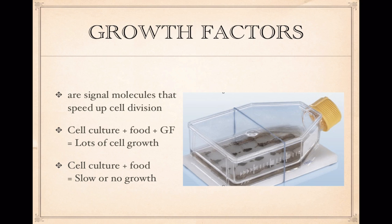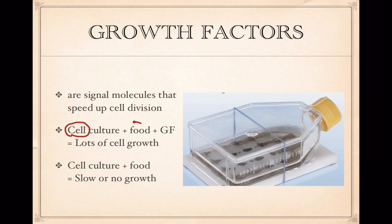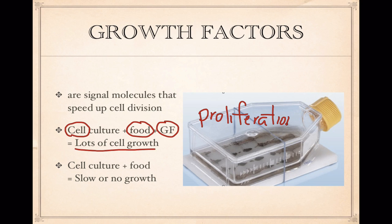For example, if you are growing cells in a culture, this jar here is the standard type of model that you grow human cells in. It's basically a fancy petri plate with a screw-on lid. What you do is if you add some cells to the culture — say you want to clone some human cells — and you give them some food and some growth factor, they will grow, and you'll get what's called proliferation. Lots and lots of cells growing if you give them the growth factor, because growth factor is stimulating them to go through their cell division.